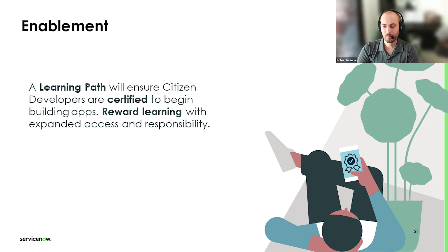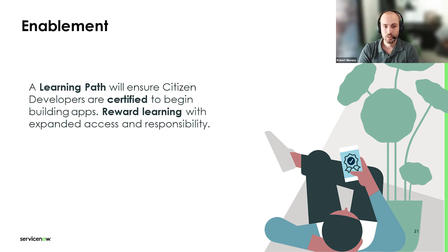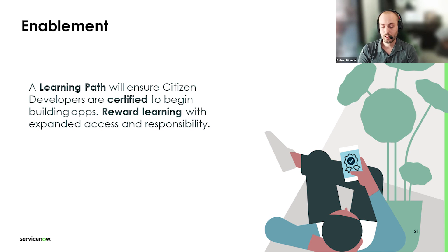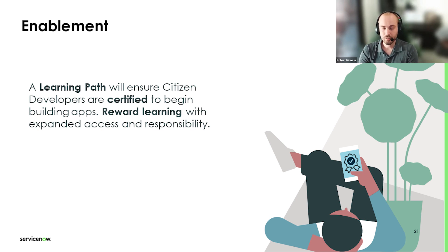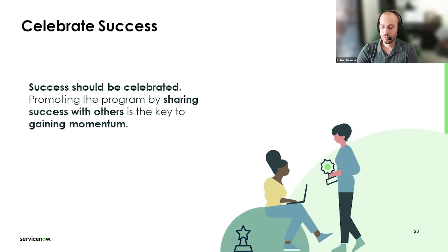Two things to pull out through that journey: enablement — making sure you have a learning path that certifies citizen developers to begin their journey and rewards further learning. Now Learning is a great place to get started; there's a learning path for citizen developers there. Putting in licensing or certification requirements for different levels of access into App Engine Studio or further development is a great way to encourage further learning. Having that reward piece is important to keep people motivated, which leads into the celebration of success.